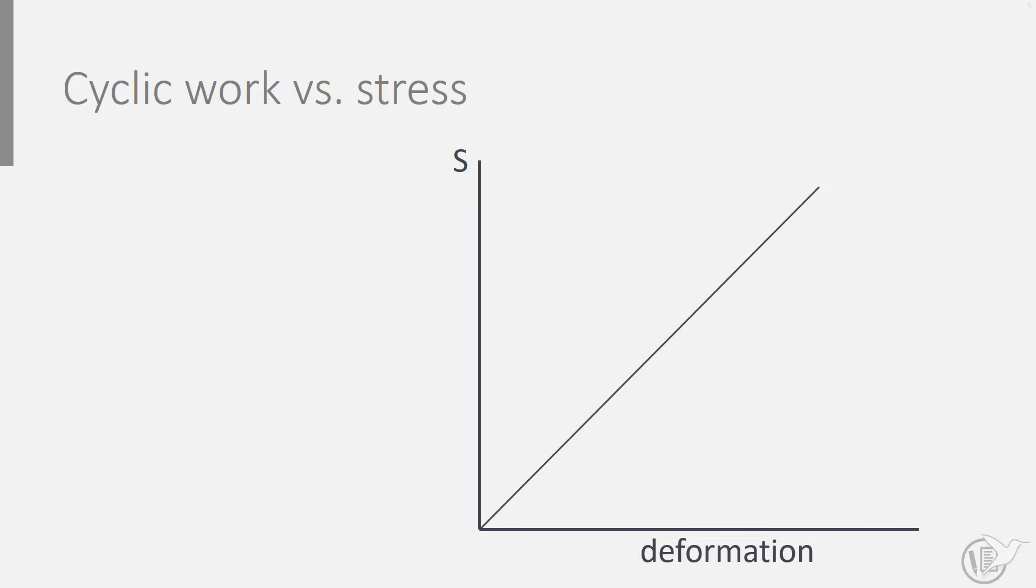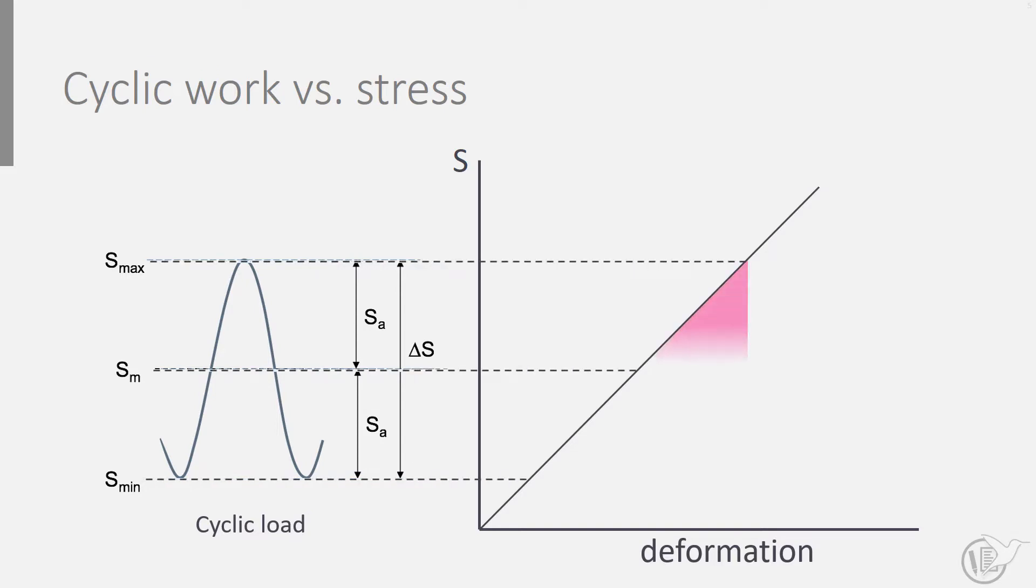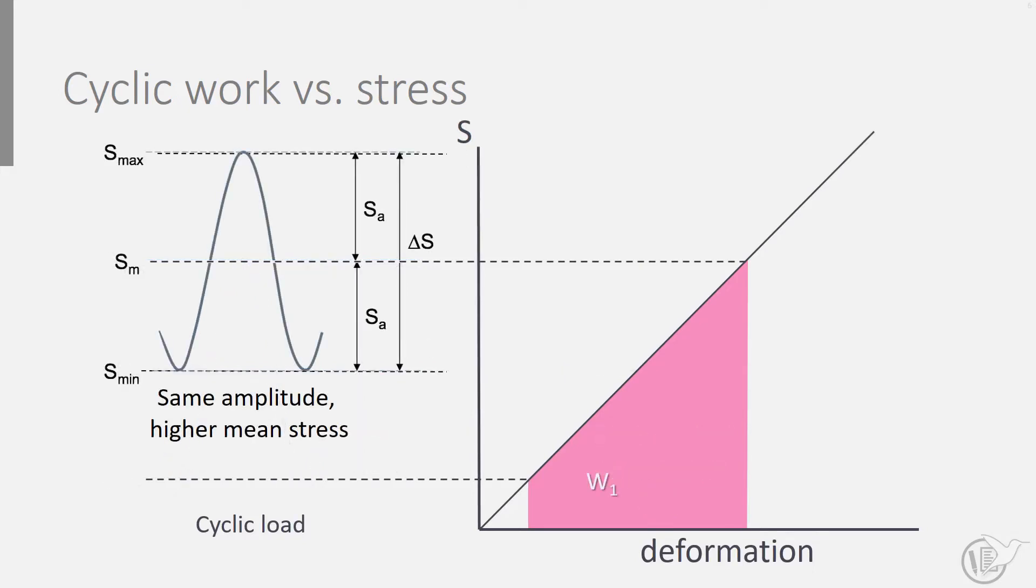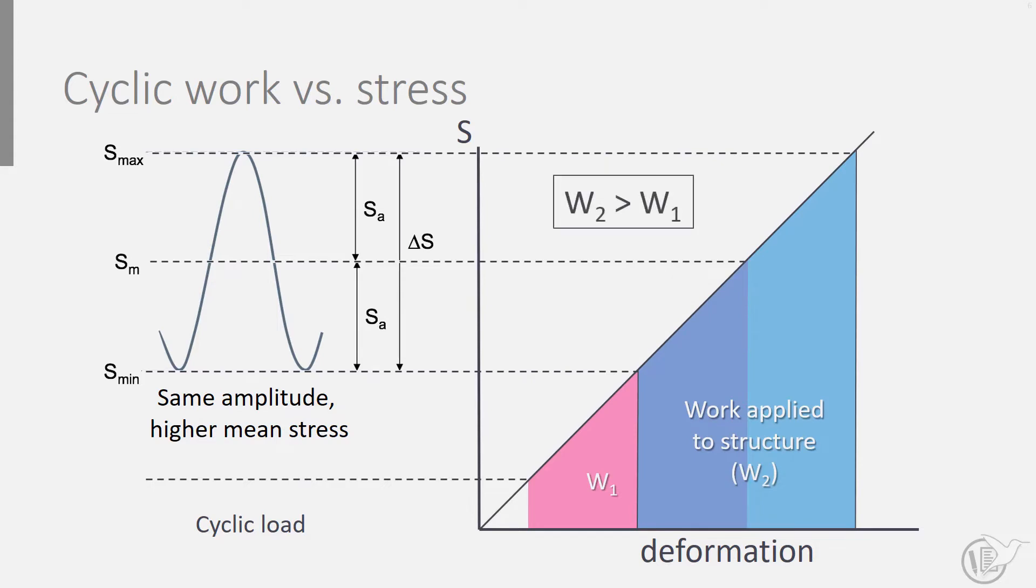One way of looking at the fatigue phenomena is through physical principles of energy. The application of cyclic loading implies that the material or structure cyclically deforms. This combination of load and deformation relates to work applied to a structure or material. Increasing the mean stress while maintaining the stress amplitude evidently implies that more work or energy is applied to the structure. Applying more cyclic energy obviously should result in more degradation or damage, and thus a shorter life.